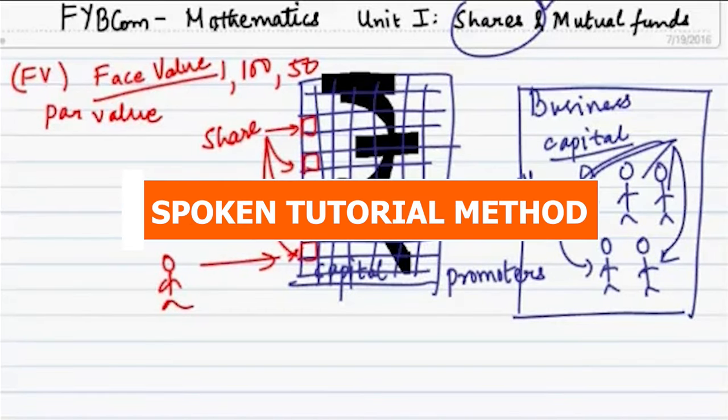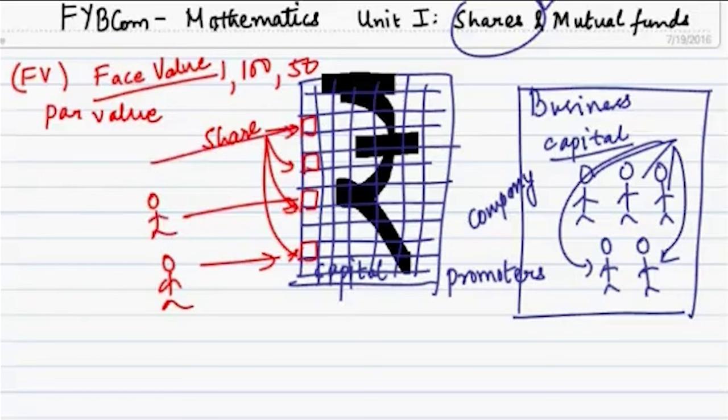So, the company gets the amount, the capital which is required by selling these shares. So, those people who buy these shares are called as shareholders.